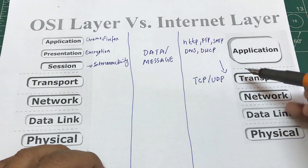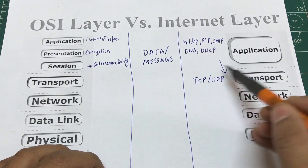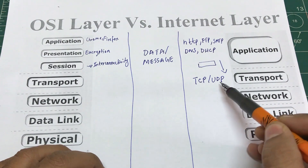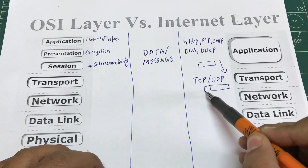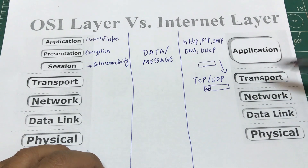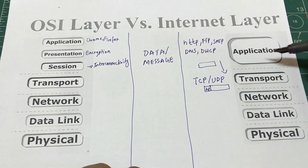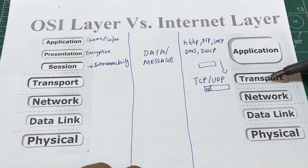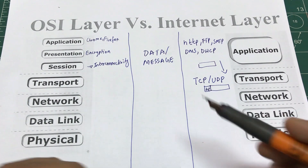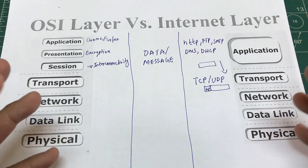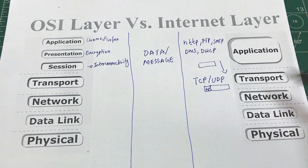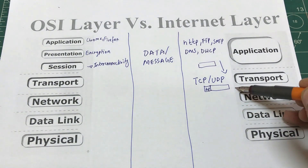When data travels from the application layer to the transport layer, the transport layer adds a header to the original message. This header tells whether it's TCP or UDP along with all associated information related to that layer.